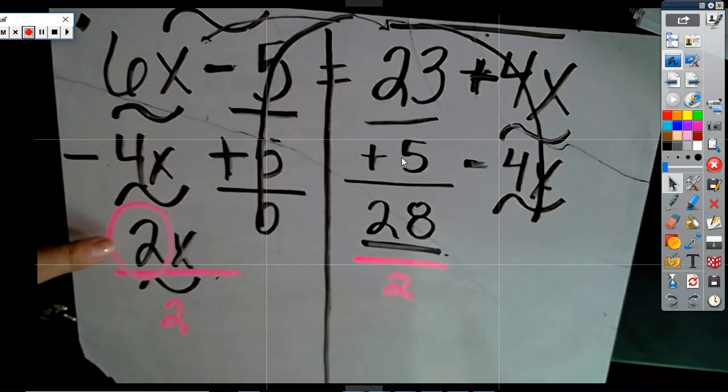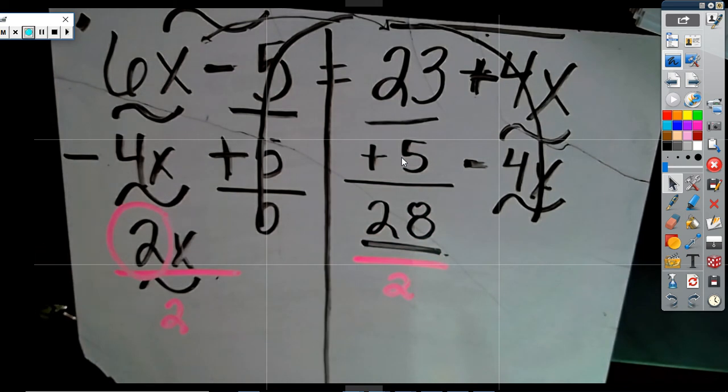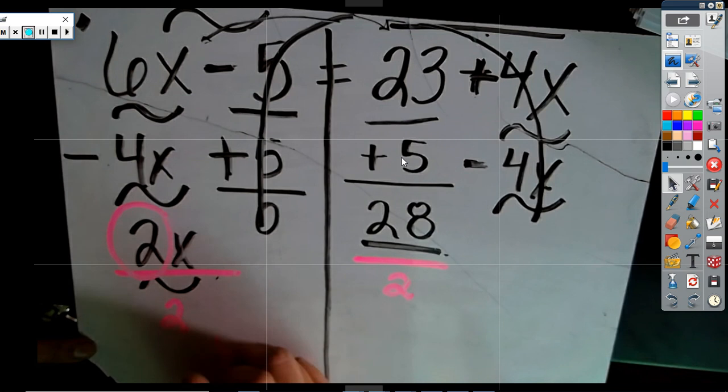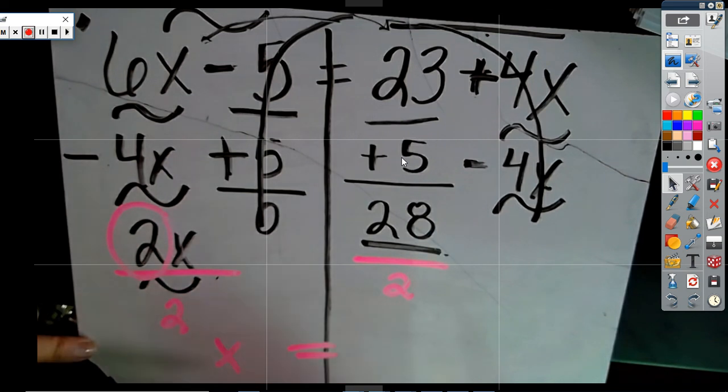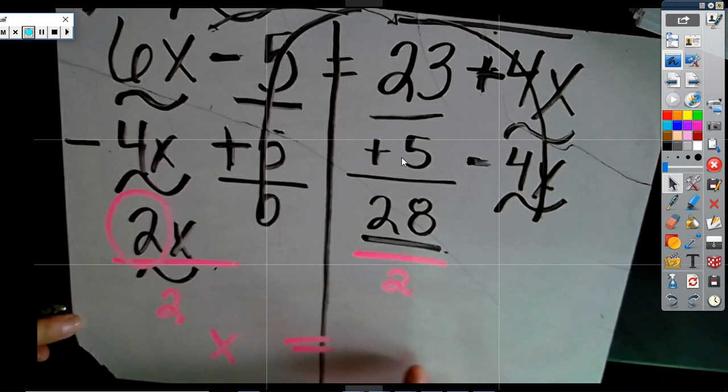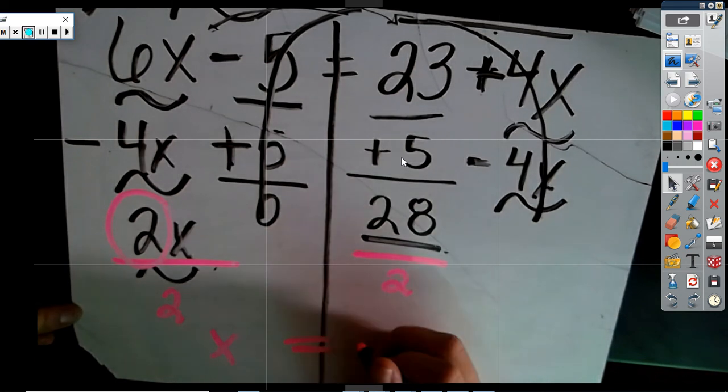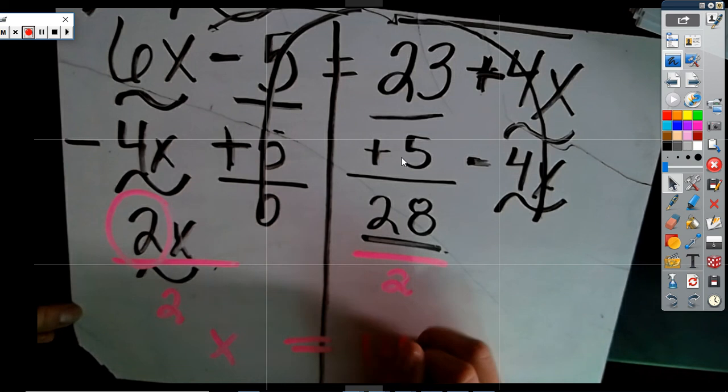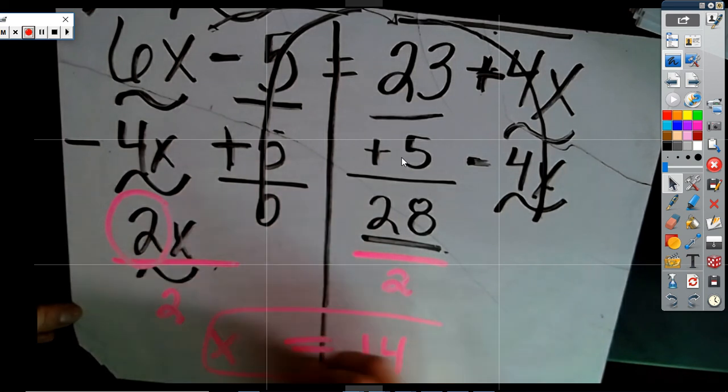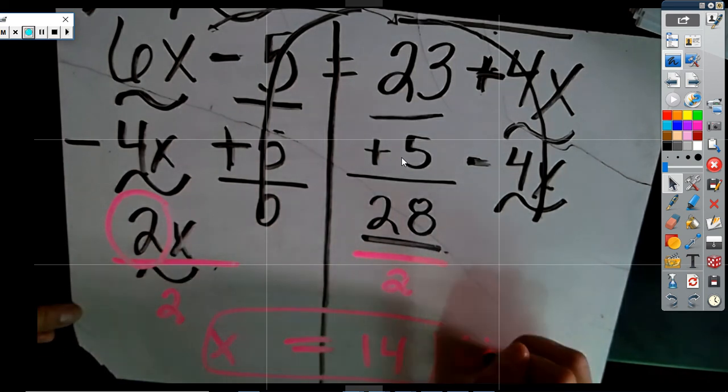So, you divide everything by 2. If this number is negative, you divide by negative. Alright. So, just one month, 1X, is how much? 28 divided by 2? 14.